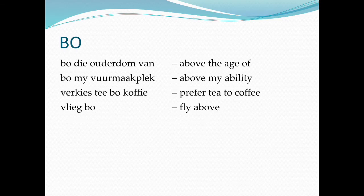Bo. Bo die ouderdom van — above the age of. Bo my vermoë — above my ability. Verkies tee bo koffie — prefer tea to coffee. Vlieg bo — fly above.